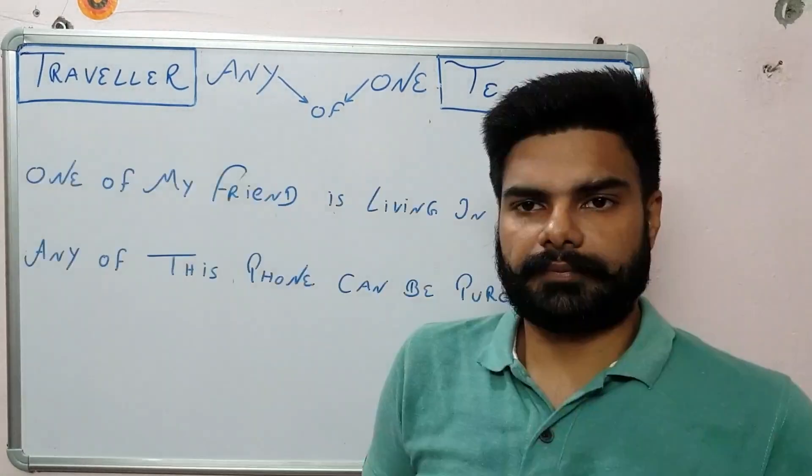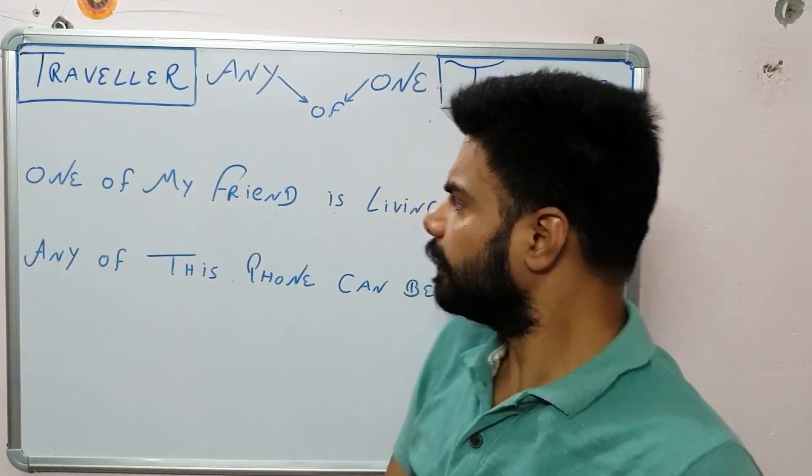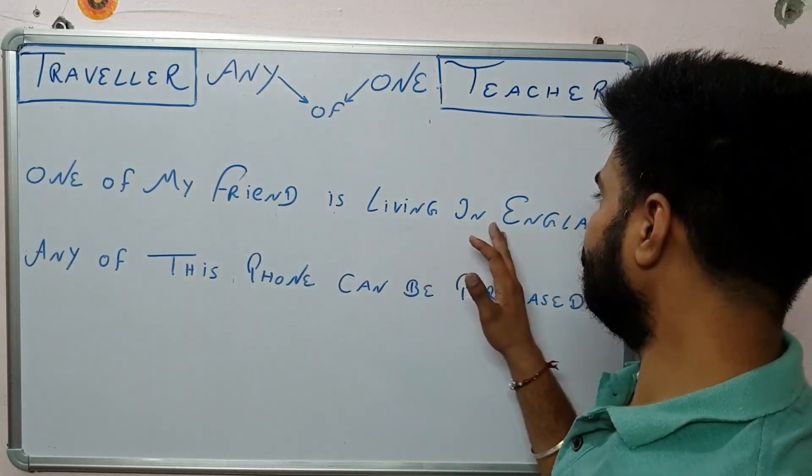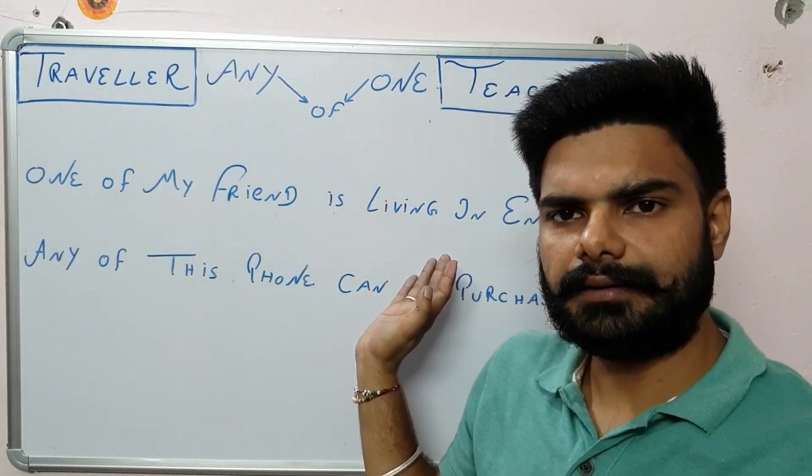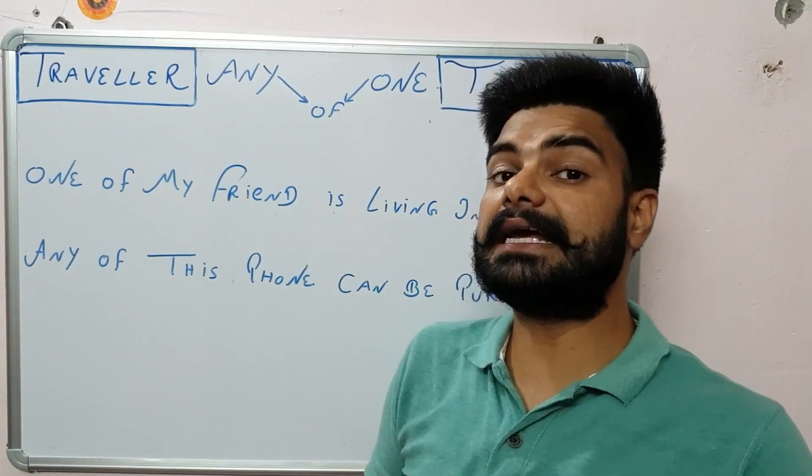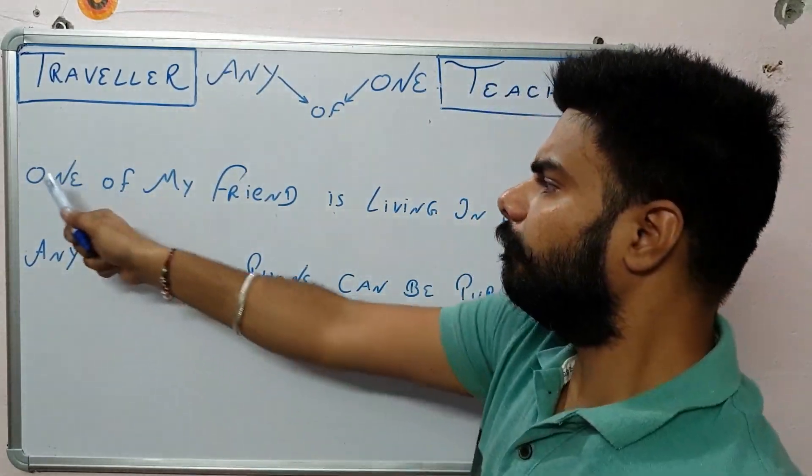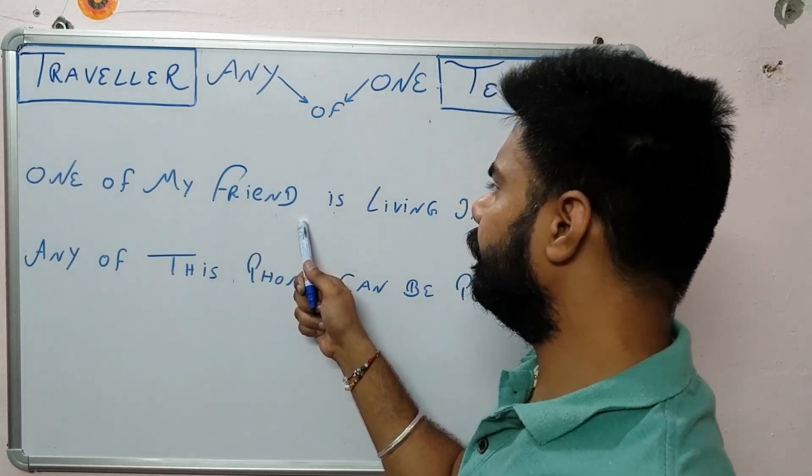Any of, one of. So let's start with examples. One of my friend is living in England. Remember this thing that we cannot write one of my friend is living.